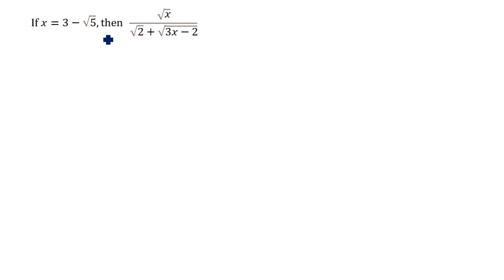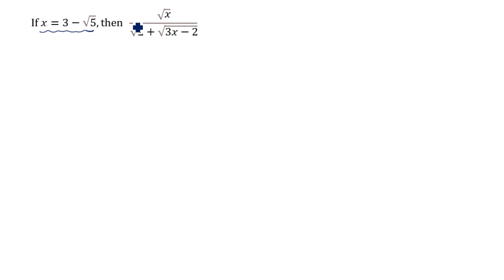The question is: if x is equal to 3 minus √5, then find √x divided by (√2 plus √(3x minus 2)). What is given is x = 3 minus √5. We need to find √x. So √x is equal to √(3 minus √5).